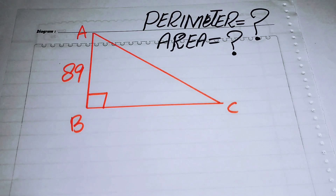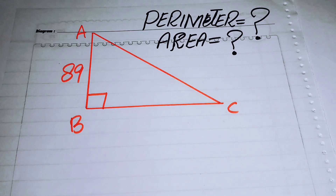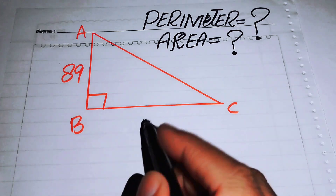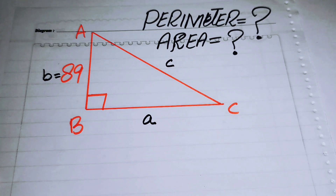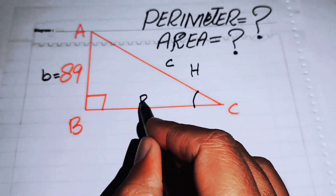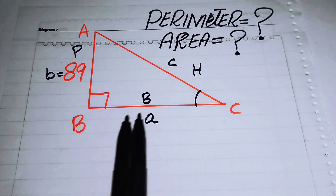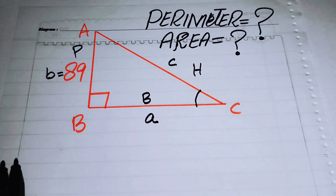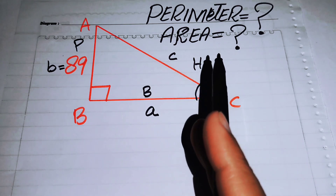Hello everyone, welcome back to the Map of Mathematics. In this video we are going to solve a nice math olympiad geometry problem. We have a right triangle in which the length of one side is 89, and we will find the area and perimeter of this right triangle. We name the sides small a, small b, and small c.